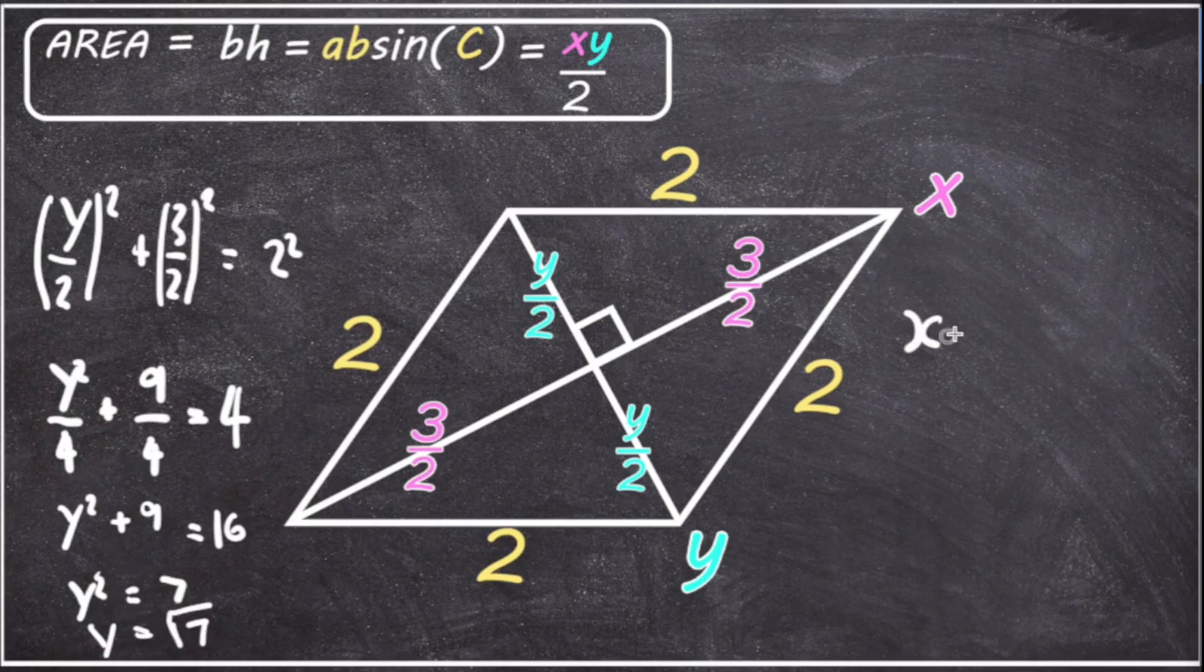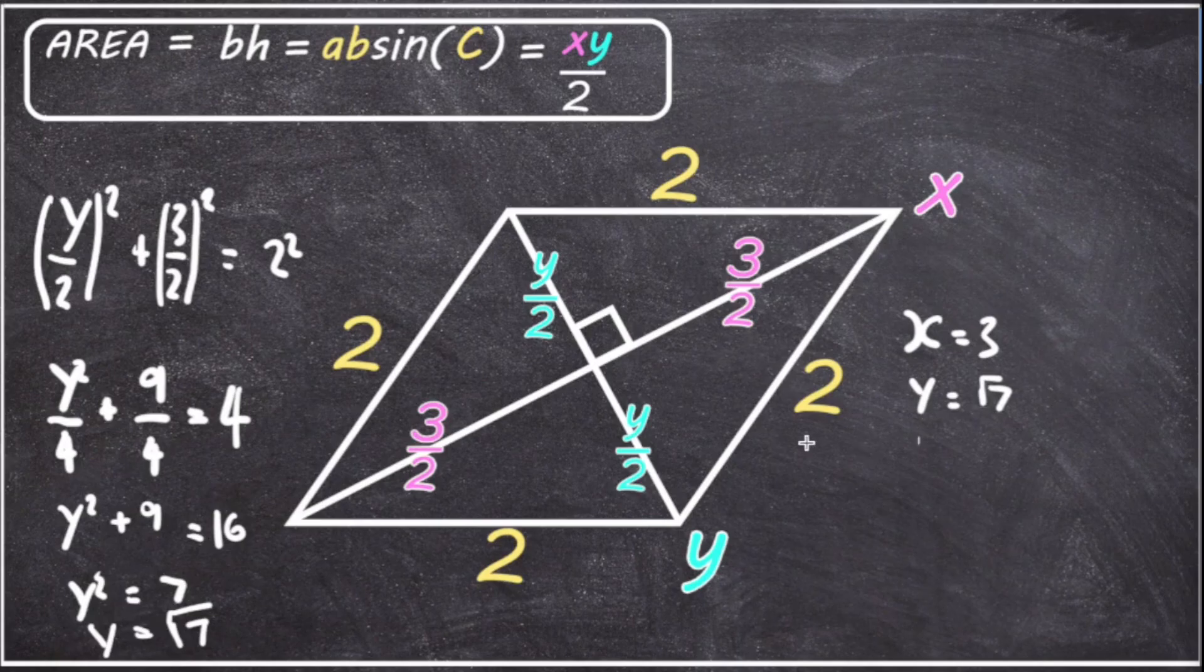So we know that X equals three, and Y equals root seven. We now have the values for X and Y.